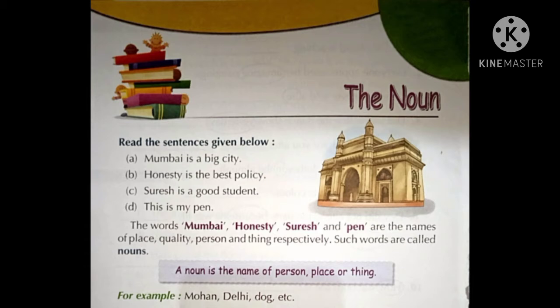Honesty, Suresh and Pen are the names of place, some quality, person and thing. So, any word ko hum noun kehate hain — like any person, place or thing. Kisike bhi name ko hum noun kehate hain. So, basically noun is a name of person, place or thing. For example: Mohan, Delhi, dog, etc.